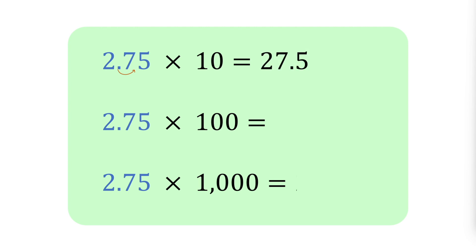To multiply by 100, move the decimal point two places to the right, resulting in 275.